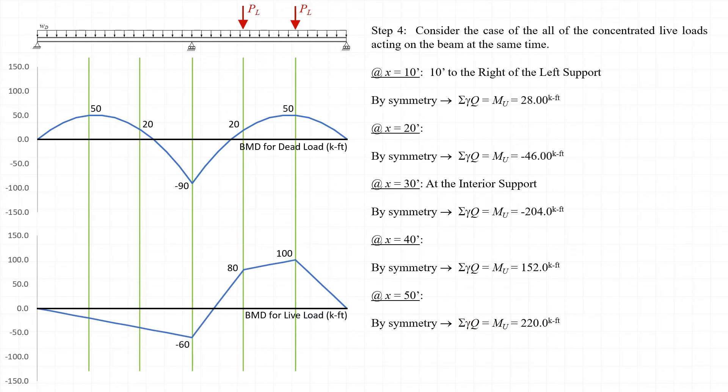Next, we'll consider the case where the live load is applied in span 2 but not in span 1. The analysis of the beam and the evaluation of the factored moment Mu is very similar to the case where the live load was applied to span 1 but not span 2, and we can use symmetry to evaluate most of these values.